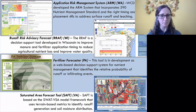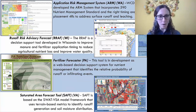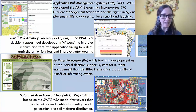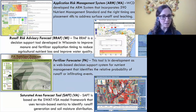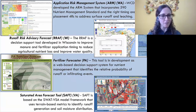Third is the Fertilizer Forecaster developed out of Pennsylvania, still under development — a decision support tool for determining nutrient management opportunities that identifies the relative probability of runoff or infiltration events. Fourth is the Saturated Area Forecast tool created out of Virginia, based on the SWAT model framework, using terrain-based metrics to identify runoff generation and soil moisture.